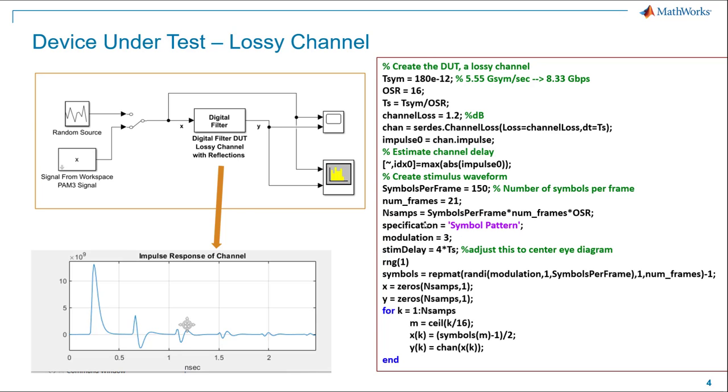This particular channel had about a 0.25 nanosecond delay and then subsequent reflections spaced periodically thereafter. I simulated it in MATLAB as well as in Simulink. This is the MATLAB simulation you see on the right where I simulated it for 21 frames where each frame consists of 150 PAM3 symbols.